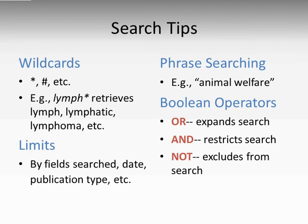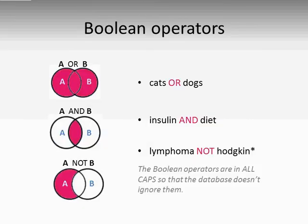Limits, such as by publication date, language, study type, or fields searched, let you narrow down a search that returns too many results. Phrase searching lets you exclude irrelevant results — use quotes to return articles using the whole phrase, rather than mentioning the terms separately. Boolean operators — AND, OR, and NOT — connect multiple ideas together. If you've broken your question into terms using the PICO model, this is how you can string those terms together so that the database understands you. OR expands your search: a search for cats OR dogs will return articles that include the word cats, the word dogs, or both. AND restricts your search: a search for insulin AND diet will return only articles that include both words. NOT restricts your search: a search for lymphoma NOT Hodgkin returns articles about lymphoma except those about Hodgkin's disease. Be careful with this, because you won't see results that talk about Hodgkin's and non-Hodgkin's lymphoma, so you may miss some results that would be useful.